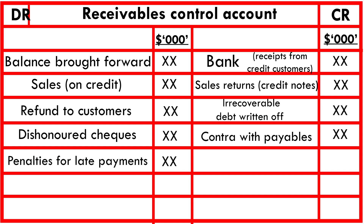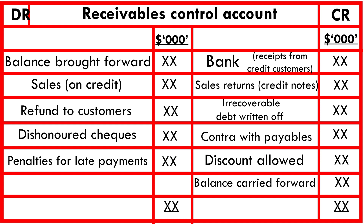Contra with payables is also on the credit side. This occurs when a customer is also your supplier — if you owe them and they owe you, you can cancel part or all of that debt. For example, if you owe them $10,000 and they owe you $8,000, you simply pay them $2,000 net. Discount allowed, specifically the settlement or cash discount, is also on the credit side. Taking the difference between debit and credit totals gives the balance carried forward to the following year.